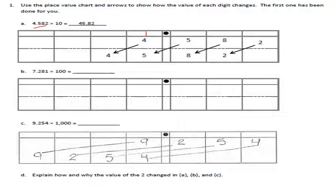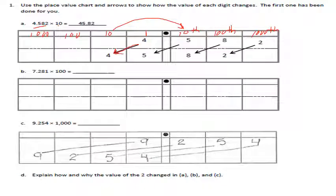The ones always go to the left of the decimal point, and the other place values have symmetry. So you have tens and tenths, hundreds and hundredths, thousands and thousandths. Since we're multiplying by ten, each digit will move one place to the left, because each place value to the left is ten times more. That's why the four moves to the tens spot.